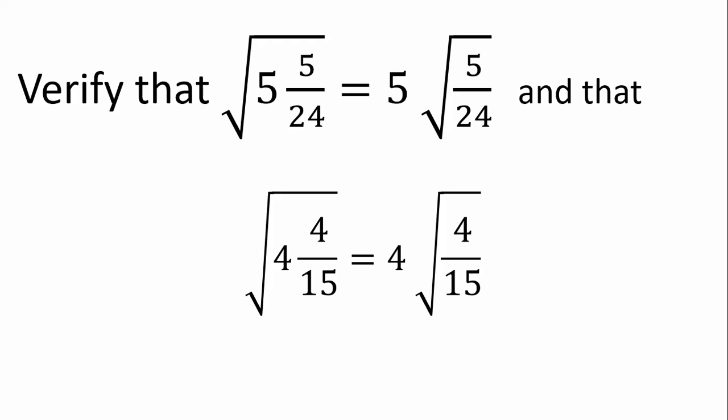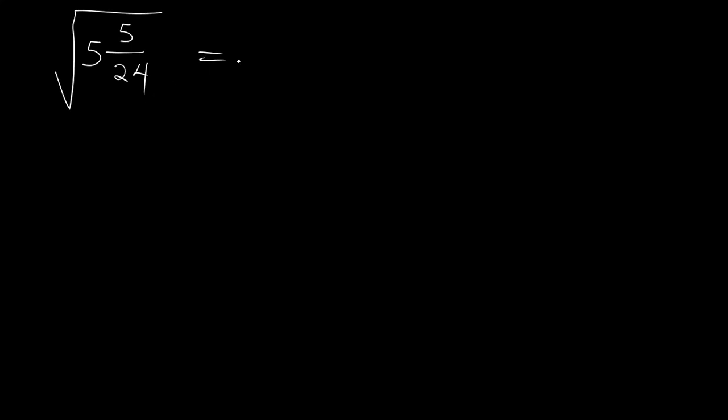This problem is all about verifying the square root of 5 and 5 over 24 is equal to 5 times the square root of 5 all over 24. Let's work it out. We are asked to verify that the square root of 5 whole number 5 all over 24 is equal to 5 times the square root of 5 all over 24.